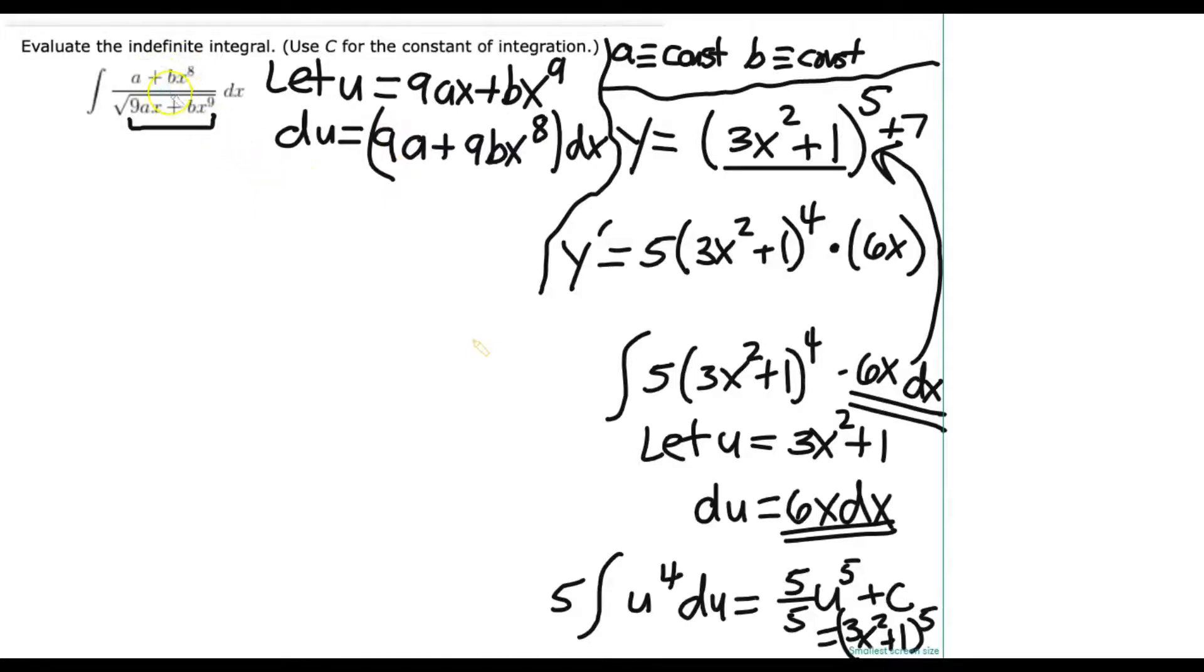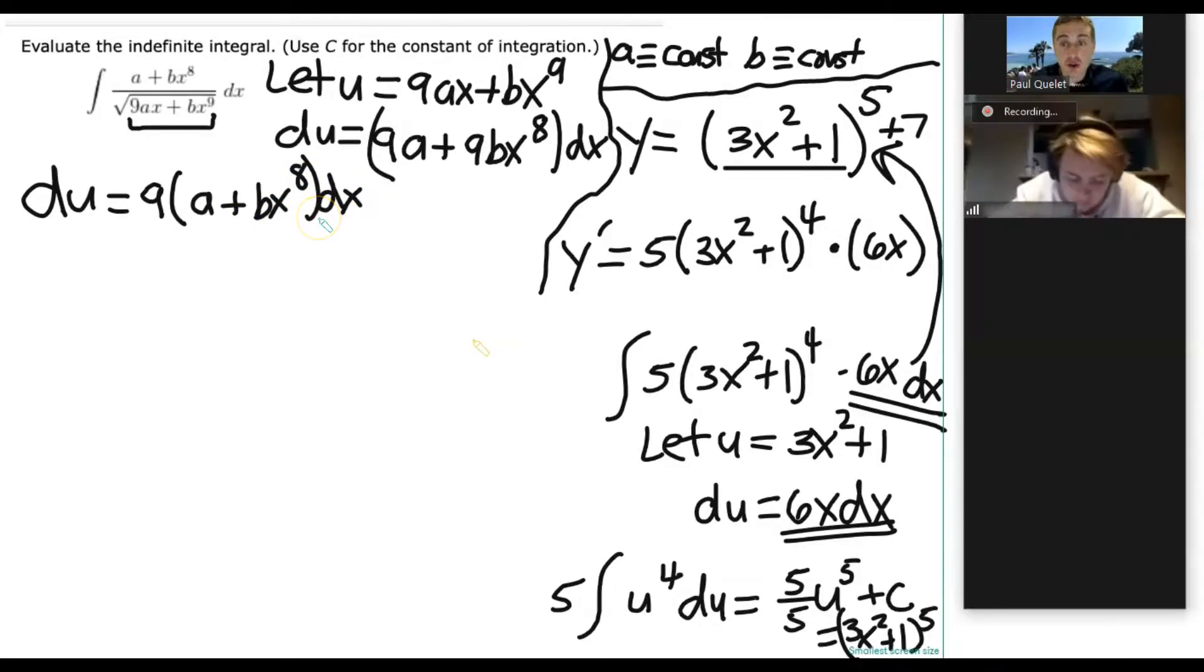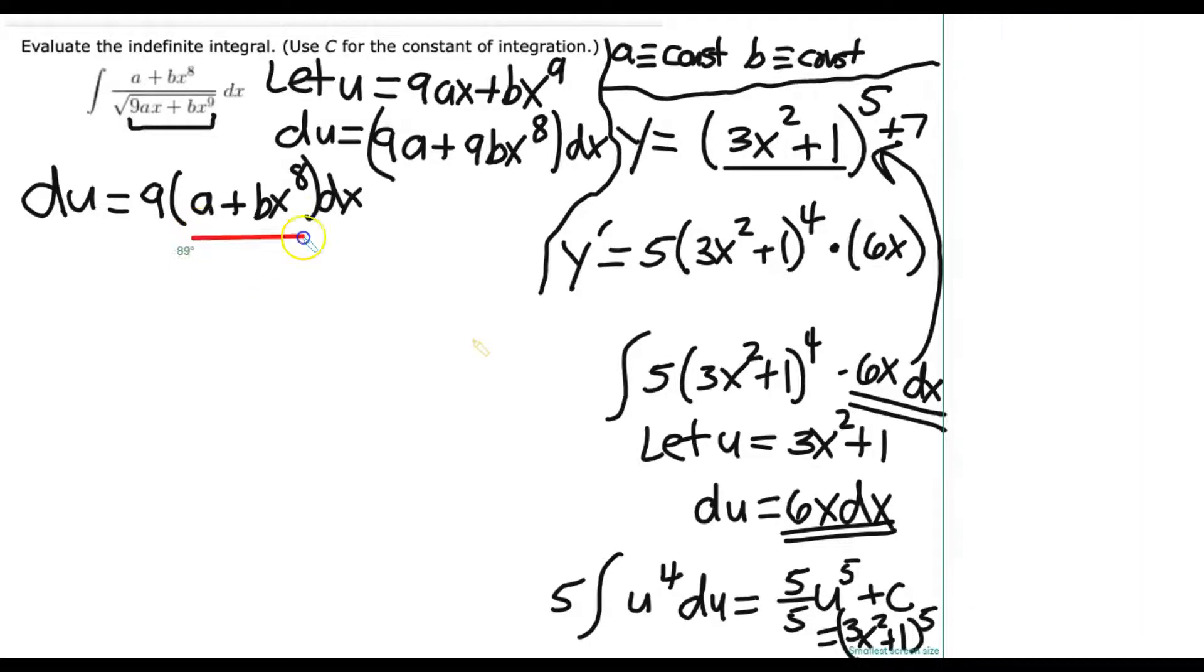Now, here's an important insight. That doesn't look exactly like the numerator, but if we're clever, this is where math requires a little bit of cleverness, we should be able to get it if we play around with our algebra. What happens if I factor out a 9 from both of these terms? What do I get remaining inside? Don't you get a plus bx to the eighth dx? And now I start to jump for joy. Because now I got something I can work with. Because a plus bx to the eighth, that's this piece.